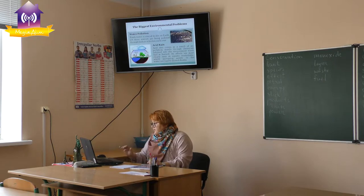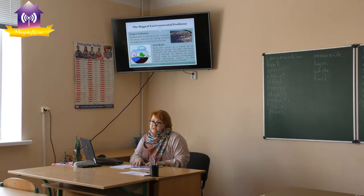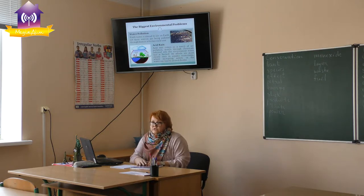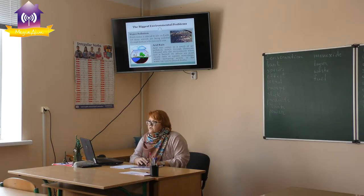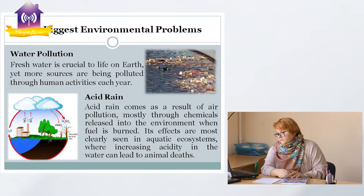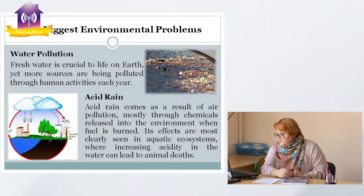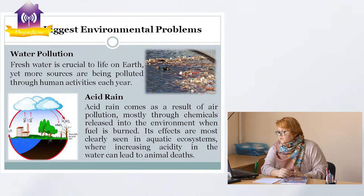Next, water pollution. I'm sure you have heard about it. Water pollution means that we are losing our fresh water. Fresh water is crucial for life on Earth, yet more sources are being polluted through human activities each year. And of course a connected, interconnected problem is acid rain. Acid rain comes as a result of air pollution, mostly through chemicals released into the environment when fuel is burned. Its effects are most clearly seen in aquatic ecosystems, where increasing acidity in the water can lead to animal death.